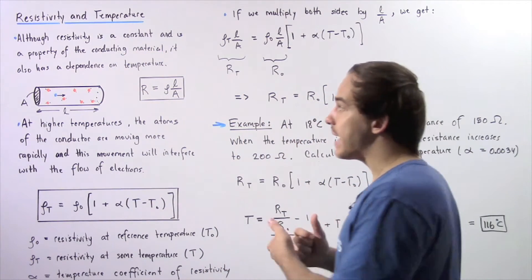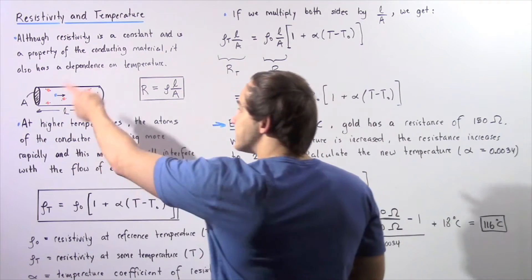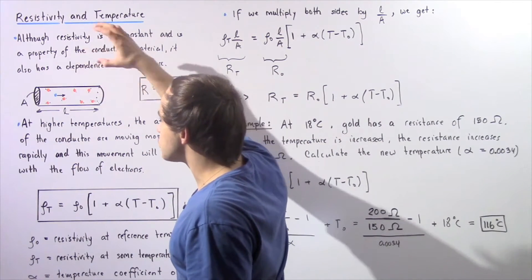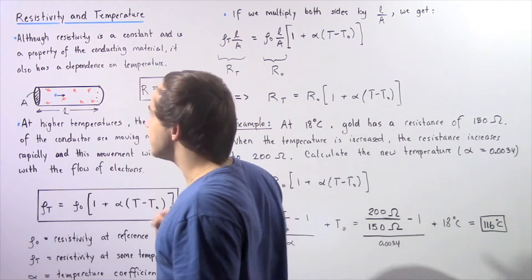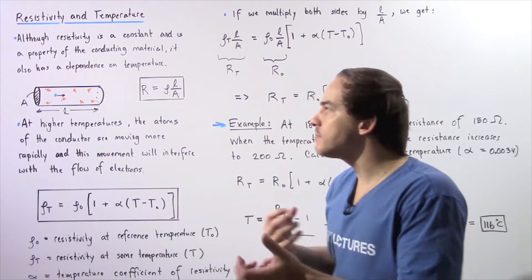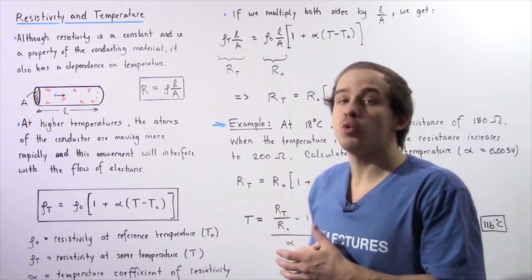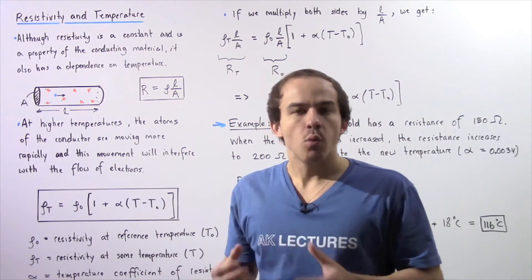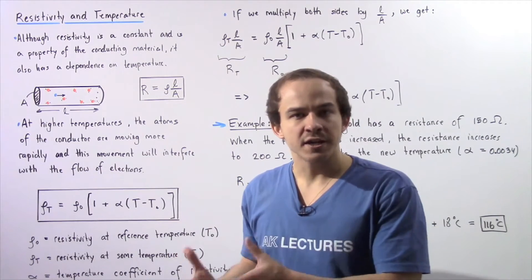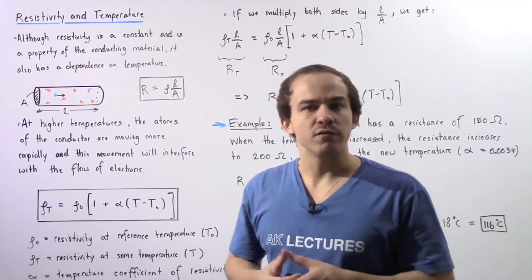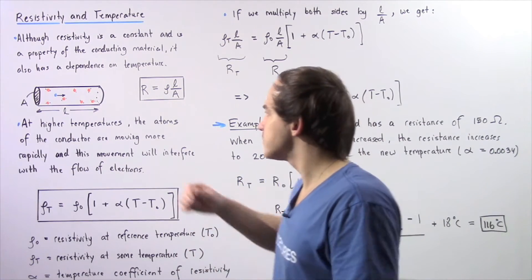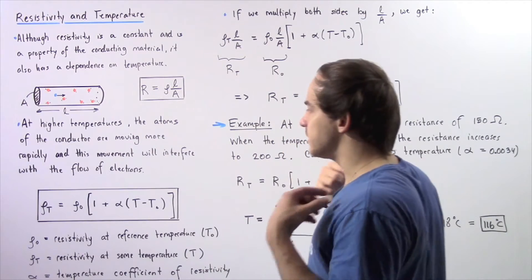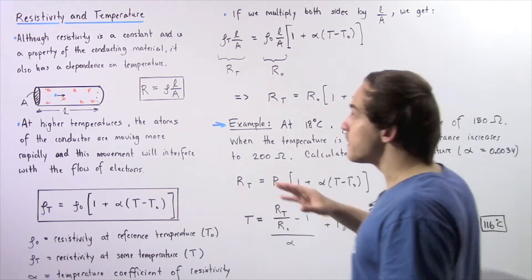Basically what happens at higher temperatures is that the atoms and molecules within our conducting material are vibrating more quickly. That vibrating motion will interfere with the flow of electrons when those electrons flow through our conducting material.